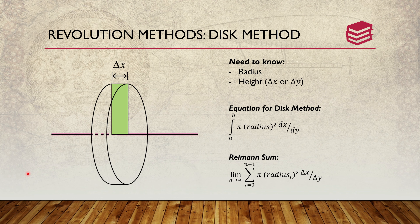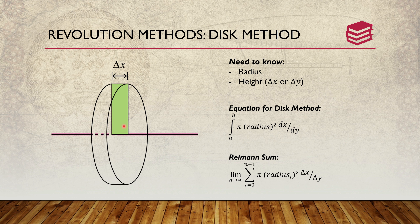The first method we're going to talk about is the disk method. Here is our disk and the rectangle of the area. We need to know the radius underneath the curve and a height. Depending on the axis, it could be delta x or delta y. The equation for the disk method is π r², where r represents the radius. You set up an integral from left to right with dx or dy depending on whether the area is left to right or up to down.